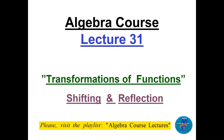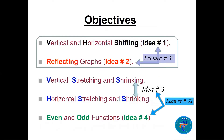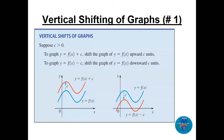Welcome, this is lecture 31 of the algebra course lecture series, covering transformations of functions. Lectures 31 and 32 are related. The objectives for lecture 31 are: idea number one — shifting, and idea number two — reflecting graphs. Lecture 32 will cover idea number three — vertical stretching and shrinking, and idea number four — even and odd functions.